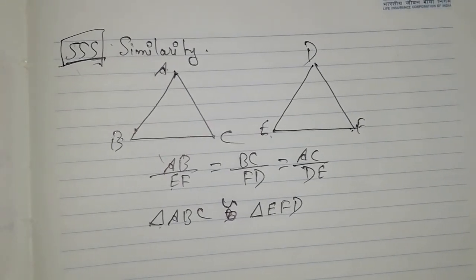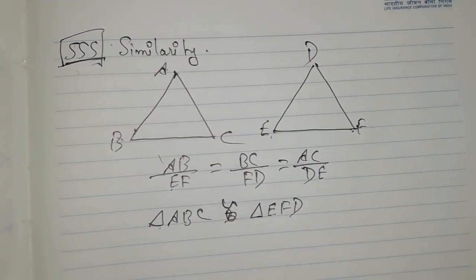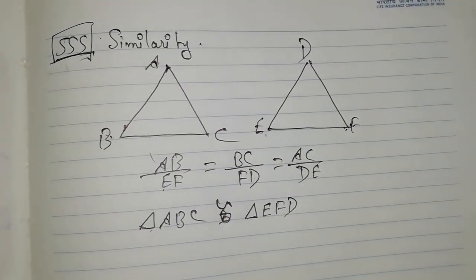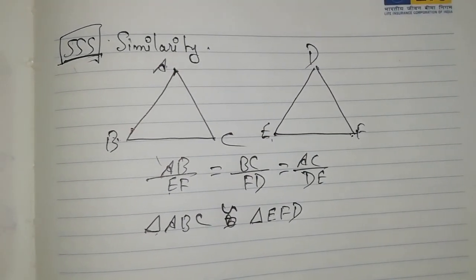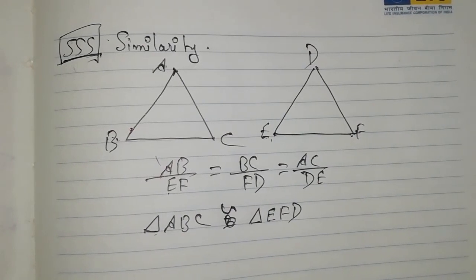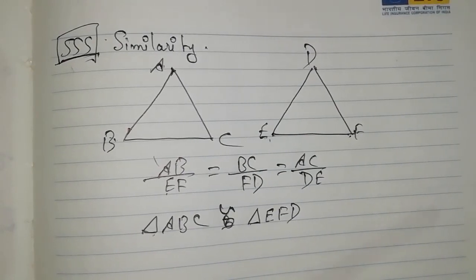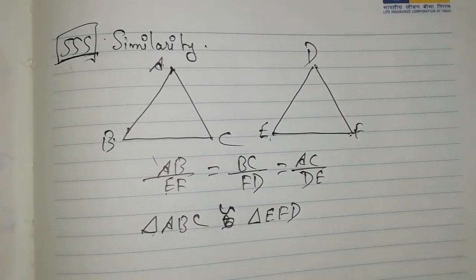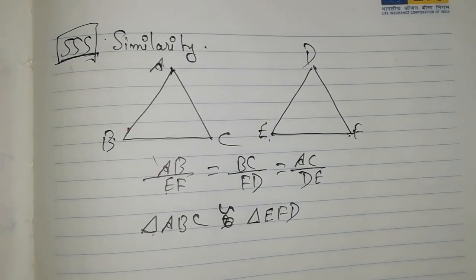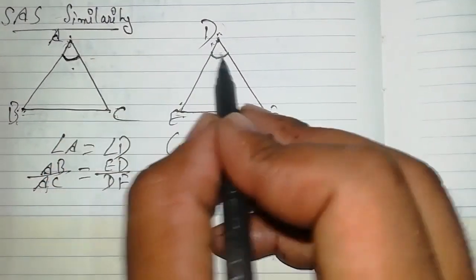In our next video we will solve questions related to these theorems and axioms. In this video we learned: internal angle bisector theorem, external angle bisector theorem, and three similarity axioms — angle-angle (AA) similarity, side-angle-side (SAS) similarity where one pair of angles and the two sides containing the angle are in proportion, and side-side-side (SSS) similarity.